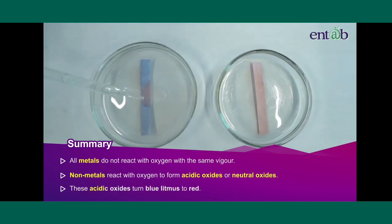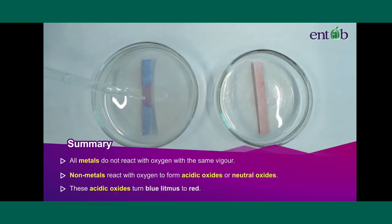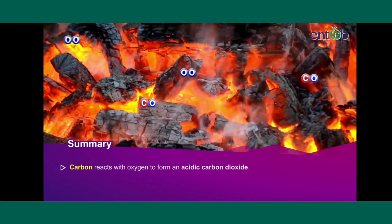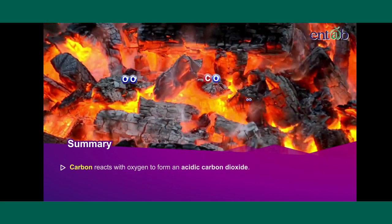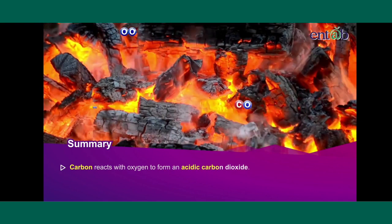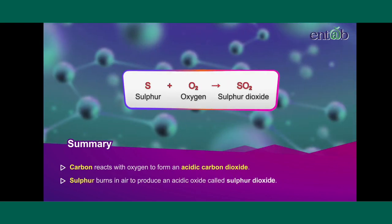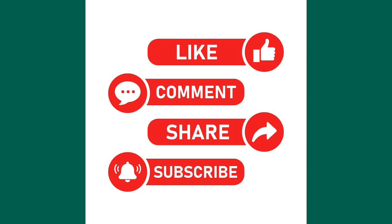These acidic oxides turn blue litmus red. Carbon reacts with oxygen to form acidic carbon dioxide. Sulfur burns in air to produce an acidic oxide called sulfur dioxide.